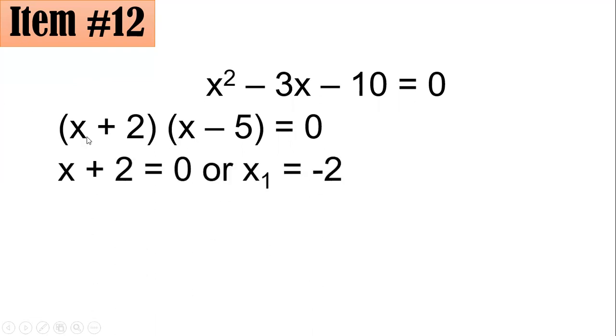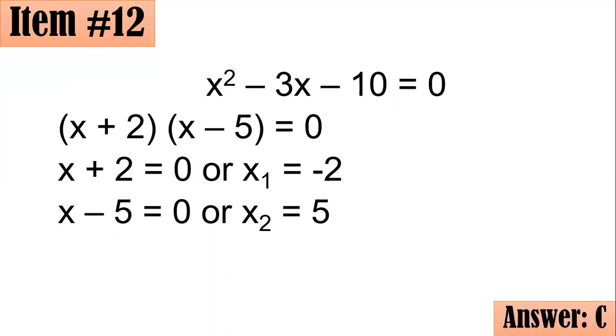If you equate the first factor to 0, x + 2 = 0, and adding both sides by negative 2, you have x₁ = -2. If you have the second factor, x - 5 = 0, then adding both sides by 5, you got x₂ = 5. Hence, if you answered C, you got it right. Negative 2 and 5.